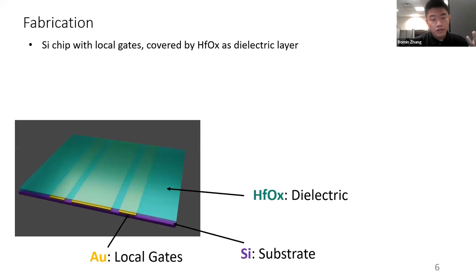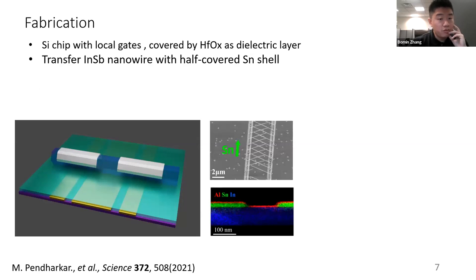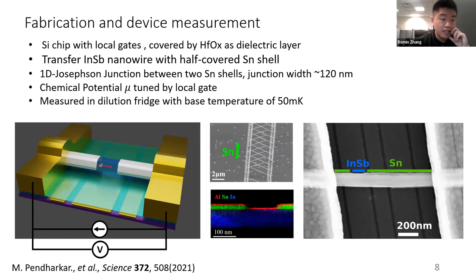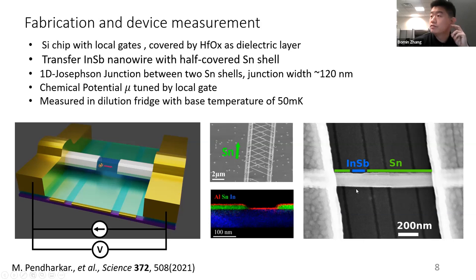Now I'd like to show you the experiments. For fabrication, we first use EBL to draw patterns and make local gates with gold, then cover everything with hafnium oxide as a dielectric. We then transfer InAsSb nanowires with a half-covered tin shell. These nanowires were recently reported in Science — they grow in a crossing shape so they can shadow each other during tin deposition, giving well-isolated tin islands. We connect the tin shell to form 1D Josephson junctions, apply a current source, and measure voltage. The junction width is about 120 nm. We tune chemical potential with local gates and measure in a dilution fridge at 50 mK.